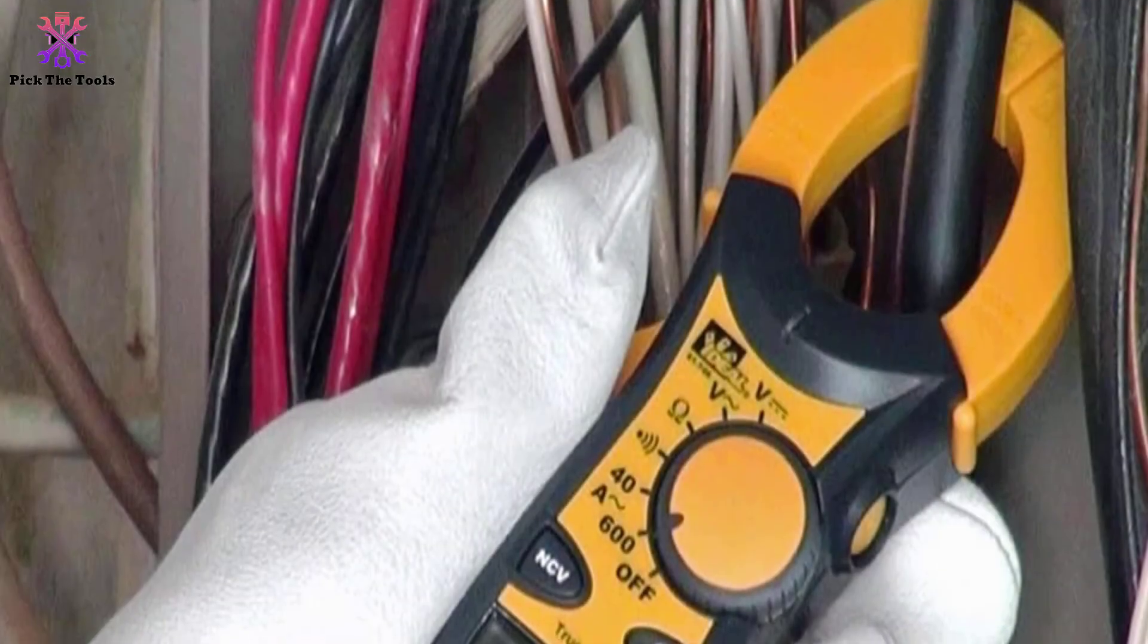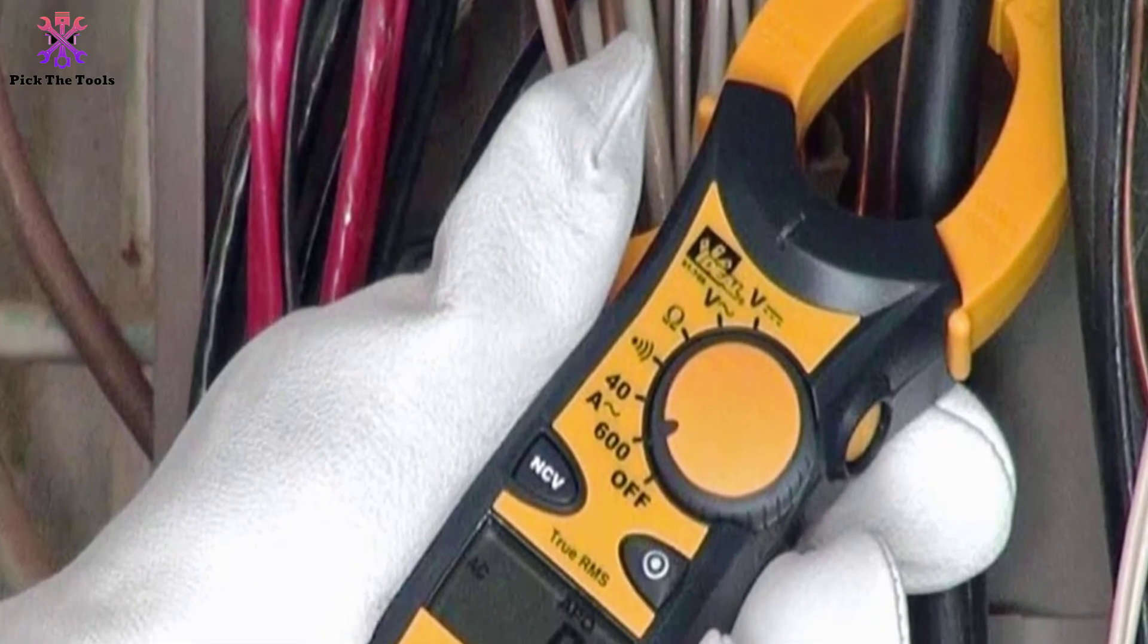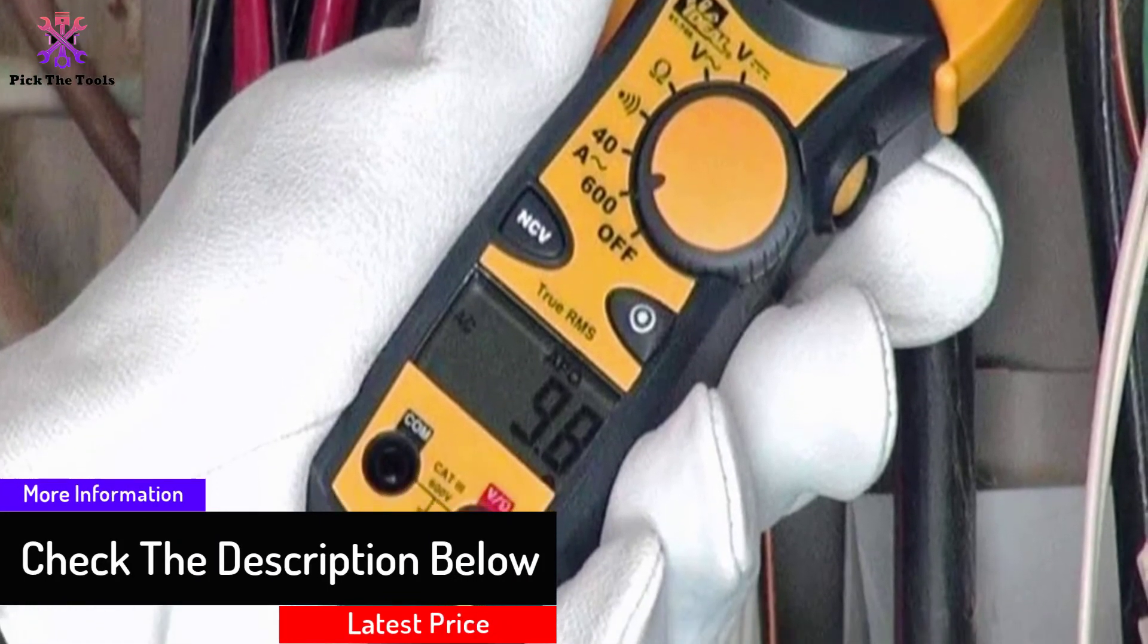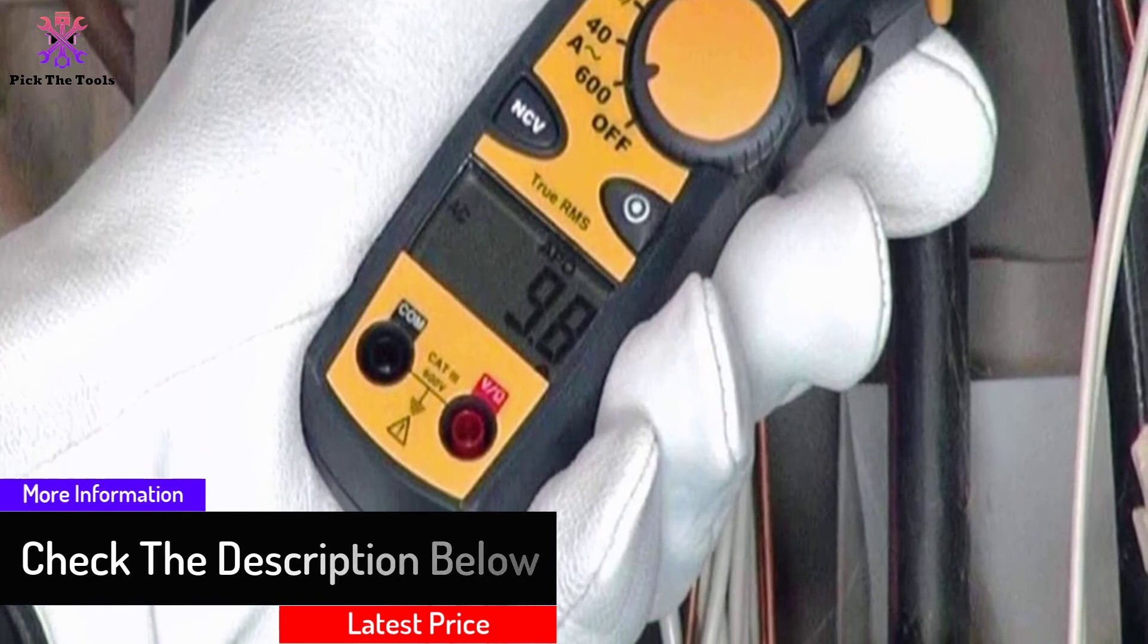Their Ideal, 61-744, 600 Amp AC with NCV clamp meter is one of the best valued and most efficient digital volt meters to get fast and accurate reading quickly with its 600AAC non-contact voltage indicator.